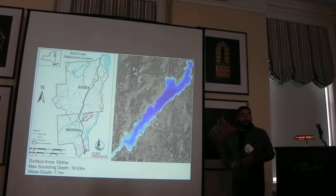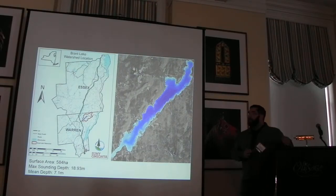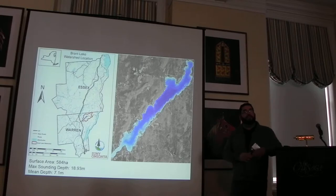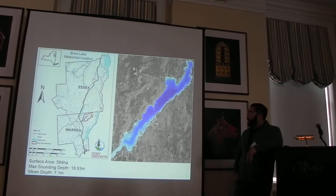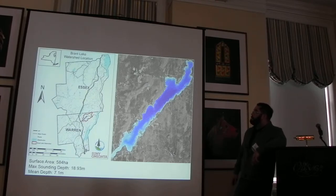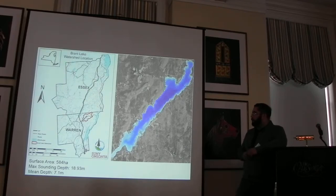To give you an introduction on the lake I work on, this is Brant Lake. It is a 584-hectare lake located in the southeastern portion of the Adirondacks, sandwiched right between Lake George, Schroon Lake, and Lake Champlain right at the north of that map. These proximities are very important, and I'm going to talk about why in a little bit.